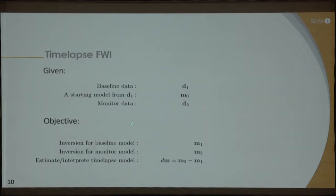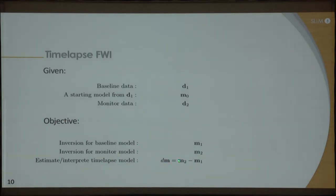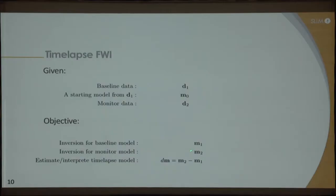In time-lapse FWI, you have baseline data, which I'll denote D1, a starting model M0, and monitor data, which I'll denote D2. The objective is to invert for the baseline to get a good estimate of the baseline velocity or density model, and get a good estimate for the monitor model. When you subtract the two, you should be able to interpret the changes due to production effects — the subtraction of M1 from M2. So if you have a good baseline and a good monitor inversion result, the difference between them should allow you to interpret the changes in the model.